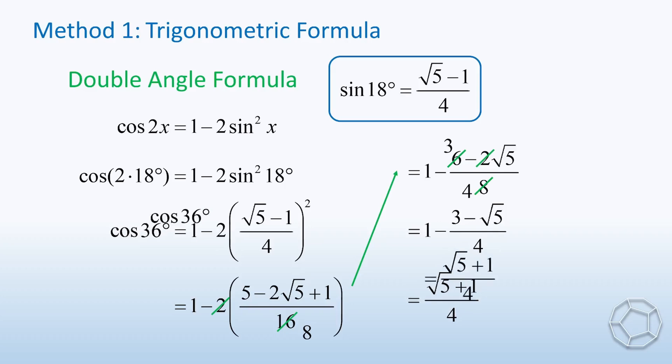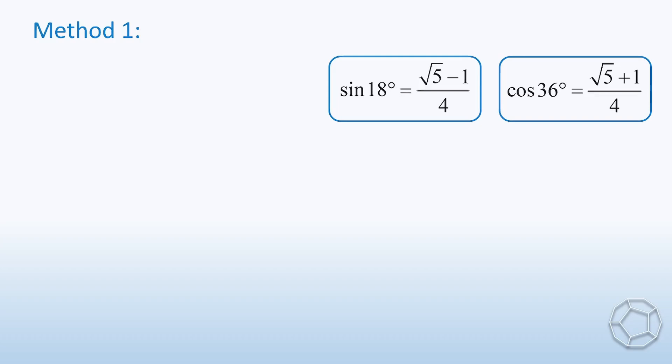So, cosine 36 degrees is equal to square root 5 plus 1 over 4. The two values look very similar to each other. Do they have any hidden relationships? Indeed, we can see that in the geometric method.